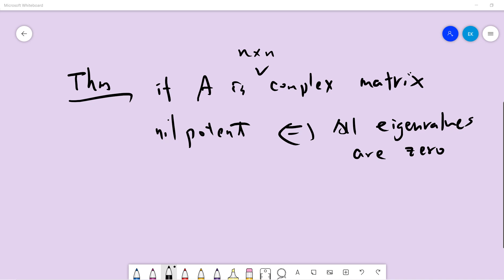Welcome, guys. So in this video, we try to prove this thing. For an n by n complex matrix, we want to prove that it's nilpotent if and only if all the eigenvalues are zero.